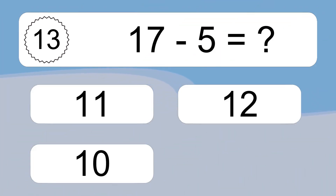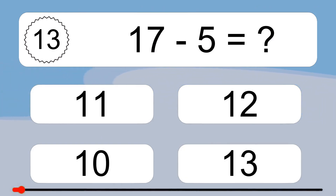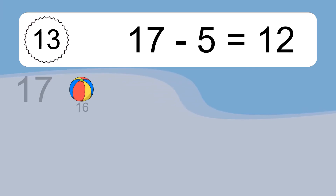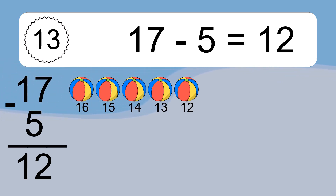17 minus 5 equals what? 17 minus 5 equals 12. Let's count it: 16, 15, 14, 13, 12.